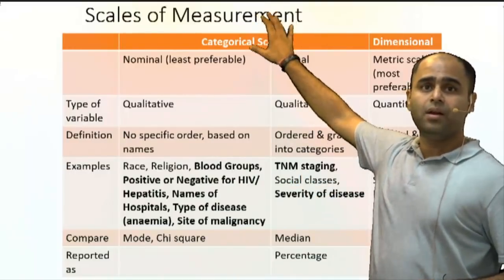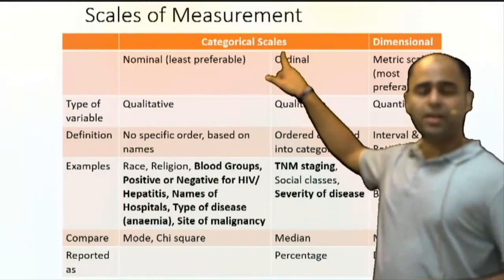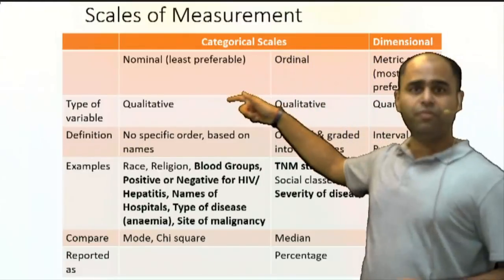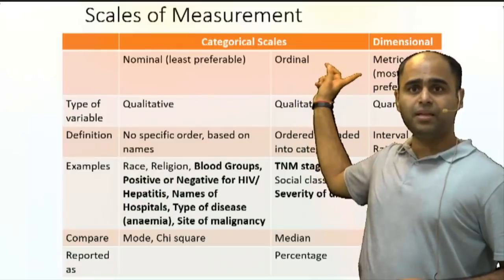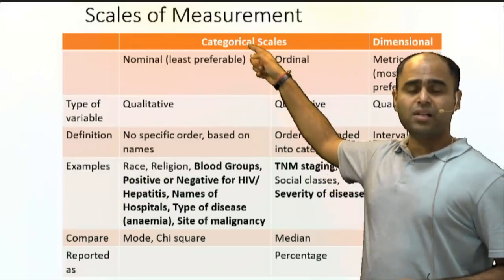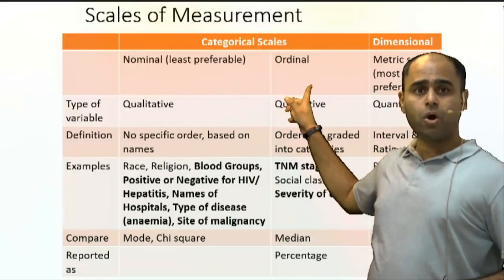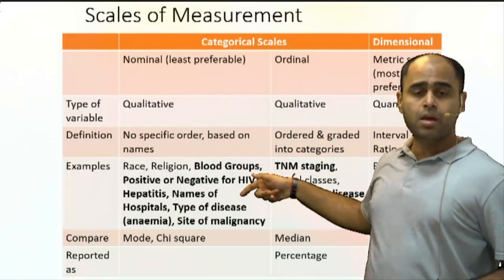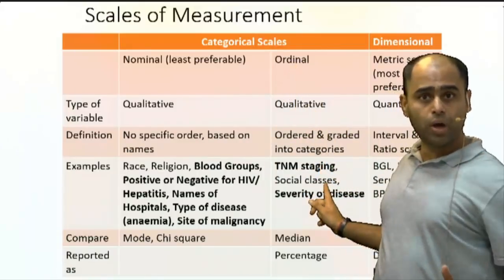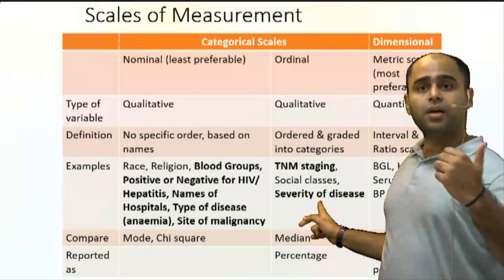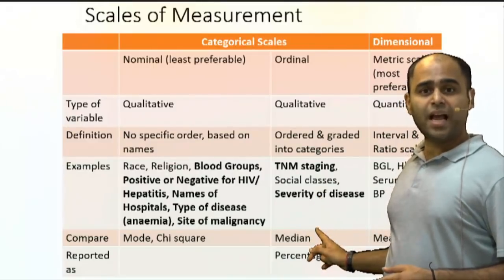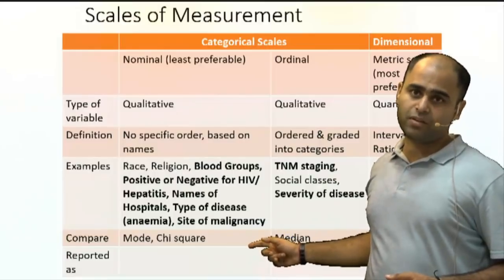To measure variables, we have scales of measurement — two main types: categorical scale and dimensional scale. Categorical scale is mainly for qualitative data; dimensional scale is for quantitative data. Categorical scale has two subtypes: nominal and ordinal. Nominal covers names — race, religion, gender. Ordinal covers order — tall, intermediate, short; severity of disease; the Kuppuswamy scale. In ordinal scale we calculate the median; in nominal scale we calculate the mode.